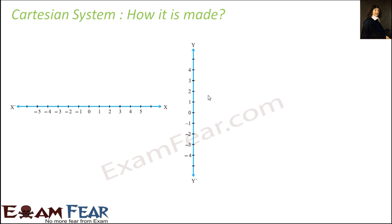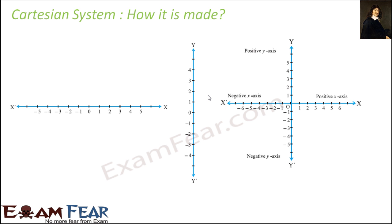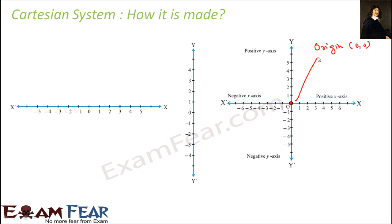These two number lines are perpendicular to each other. He placed them such that they are perpendicular and meeting at a point. These two lines — the x–x' axis and the y–y' axis — are actually two perpendicular number lines meeting at a point, which is called the origin. This point is called origin.